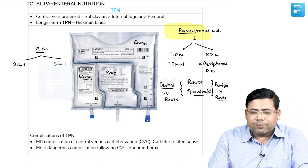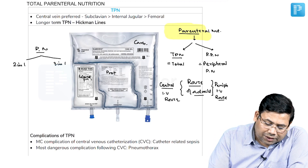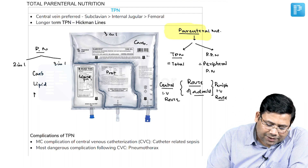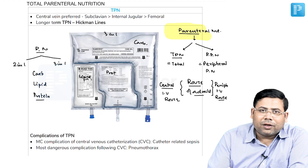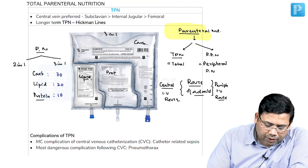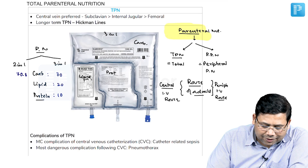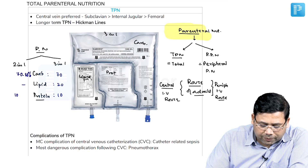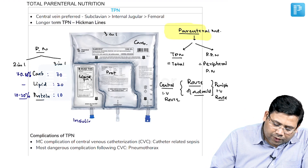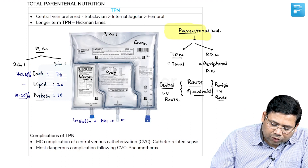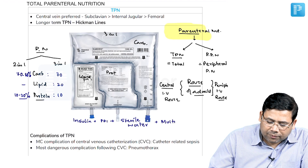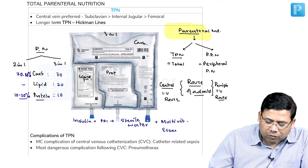How do you identify the compartments? A whitish, milky structure is generally the emulsion pool of lipids — that is the three-in-one. In the two-in-one, there are carbohydrates and proteins but no lipids. The composition is approximately 70–80% carbohydrates and 10–20% proteins. Along with macronutrients, they contain insulin, PPIs, sterile water for dilution, multivitamins, and all essential elements.